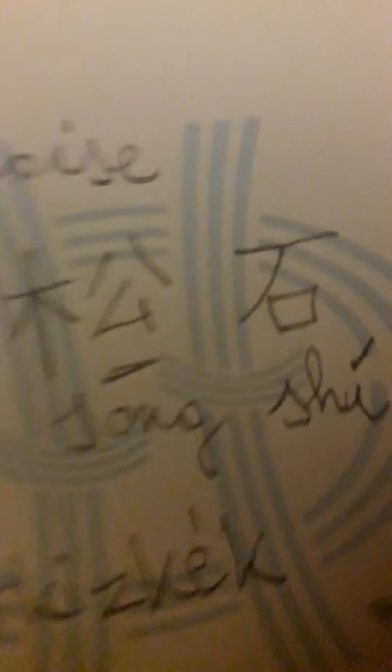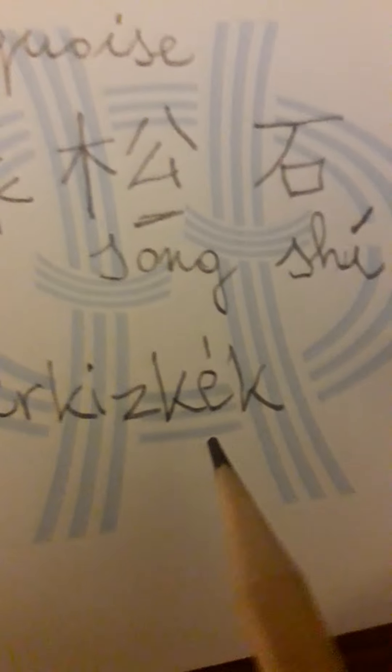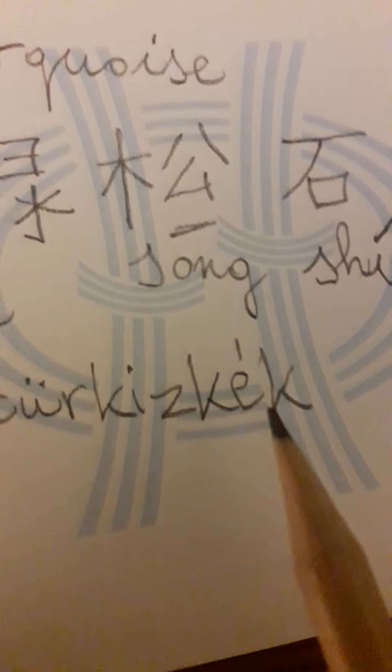And now in Hungarian: Turkish cake. Cake means blue, by the way.